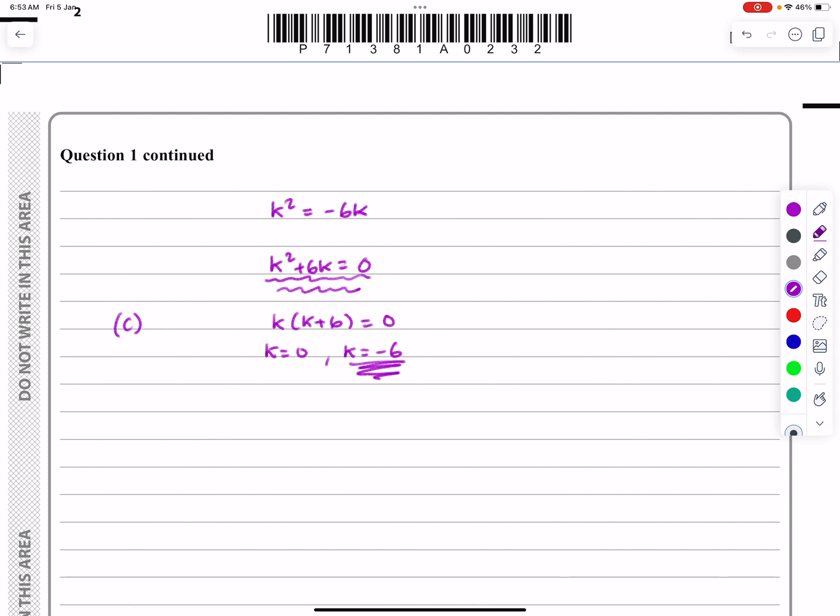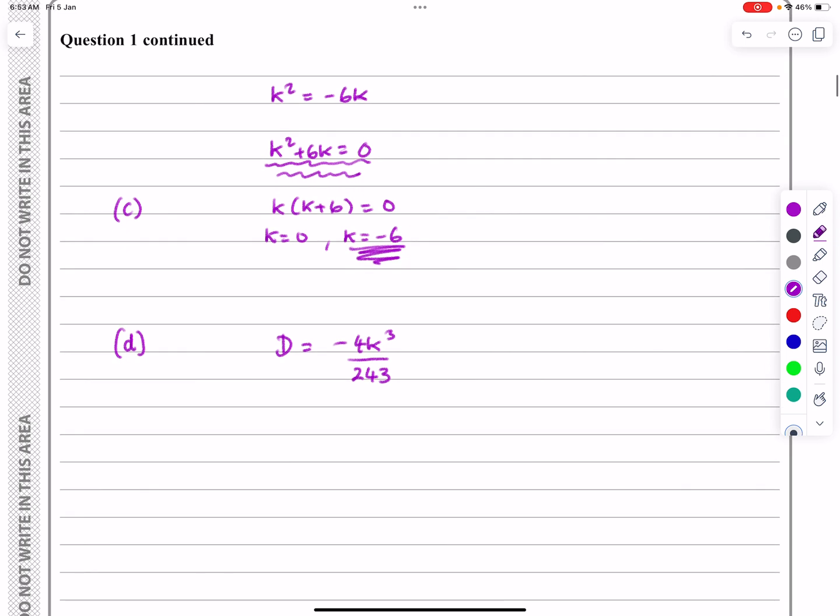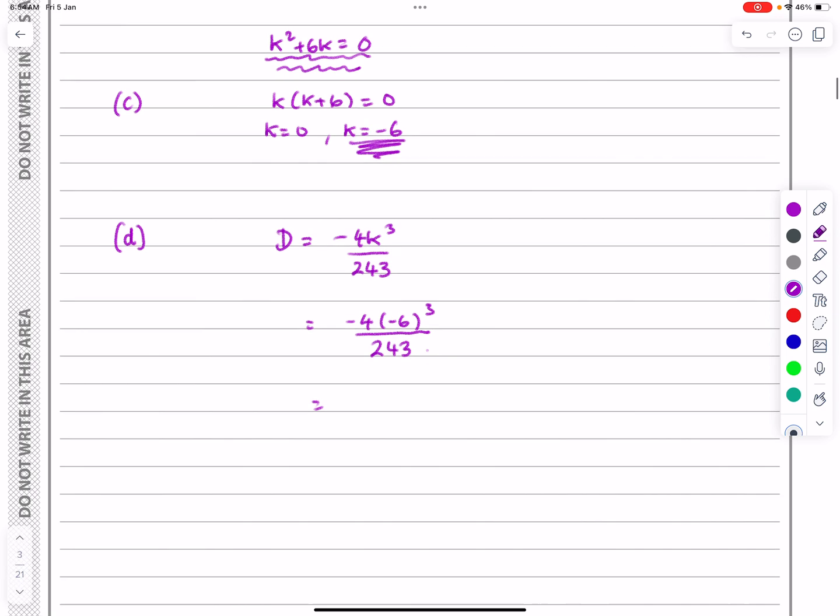And then for part D, D was equal to minus four k cubed over two, four, three. And we know that k is equal to minus six. So I might as well just put it in in case I've made any mistakes anywhere. Try and get method marks.